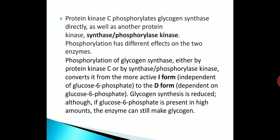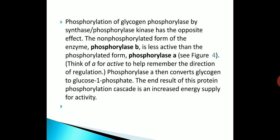Protein kinase A phosphorylates glycogen synthase directly, as well as another kinase called synthase phosphorylase kinase. Phosphorylation has different effects on these two enzymes. Phosphorylation of glycogen synthase converts it from the more active I form (independent of glucose 6-phosphate) to the D form (dependent on glucose 6-phosphate), reducing glycogen synthesis. Phosphorylation of glycogen phosphorylase by synthase phosphorylase kinase has the opposite effect — the non-phosphorylated phosphorylase B is less active than the phosphorylated phosphorylase A.